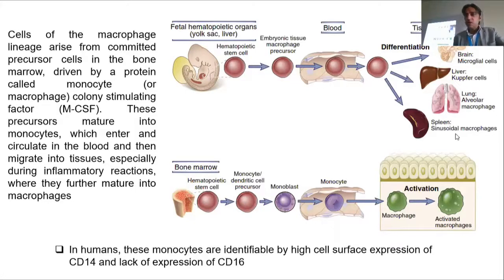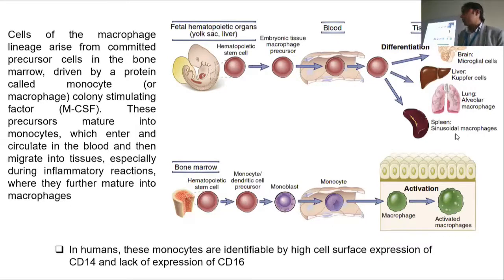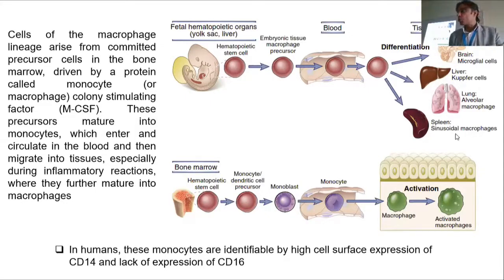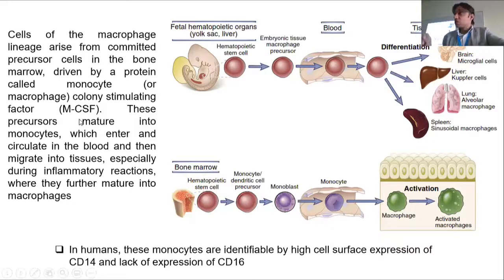Macrophages arise during development from the liver; after birth, they arise from the bone marrow. They are usually driven by a protein called monocyte colony-stimulating factor (M-CSF) — a marker that pushes monocytes to become macrophages. Every cell contains all the genes, and M-CSF is the signal that pushes cells to transform themselves into macrophages.